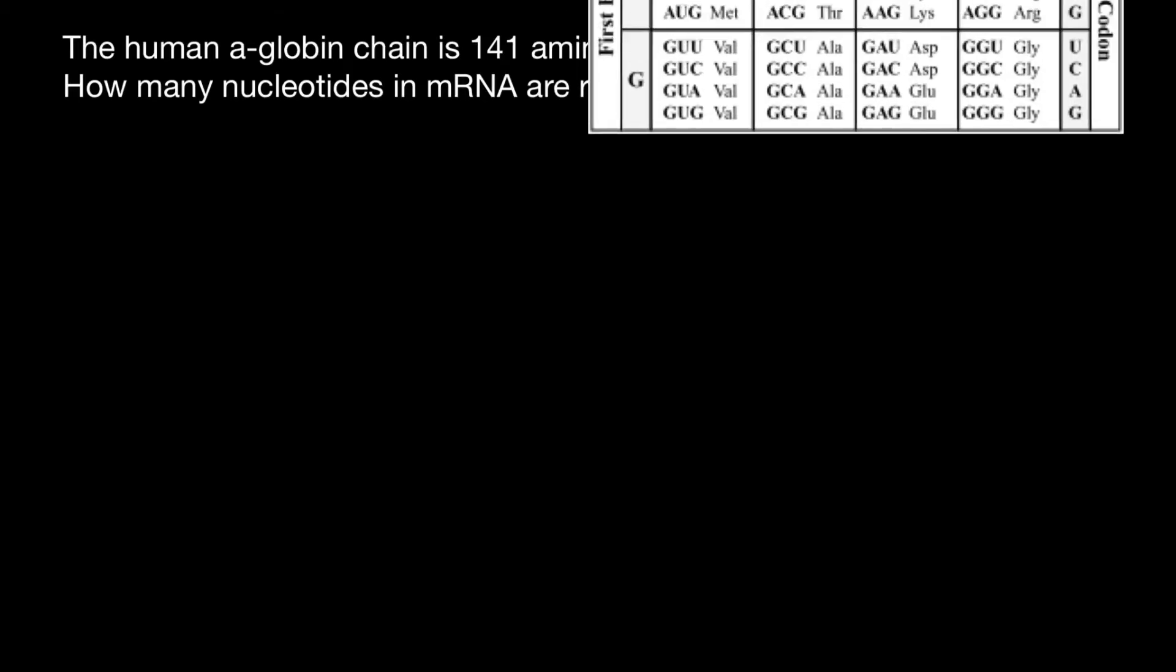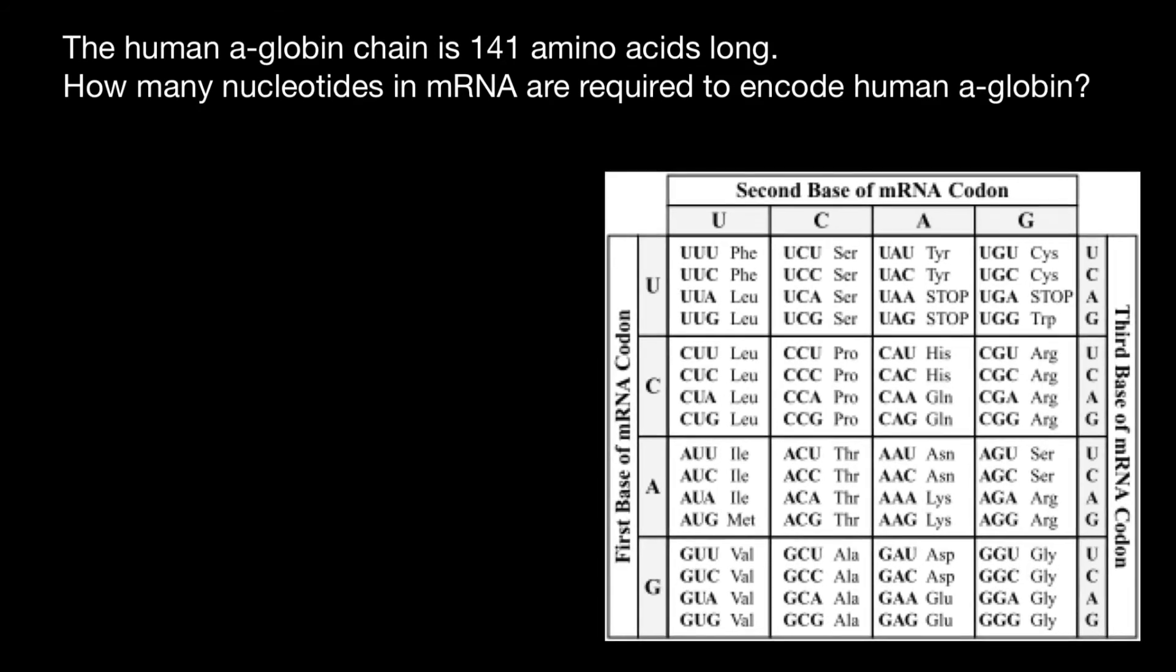Take a look at this codon table. If you look closely, you'll see that each amino acid, of which we have 20, is coded by three nucleotides, which we call codons. Some of these codons specify stop codons. When the ribosome reaches these codons, it stops translation and is released from the messenger RNA.